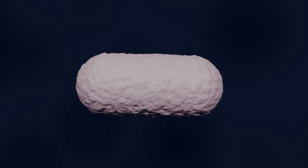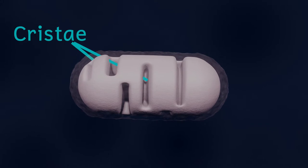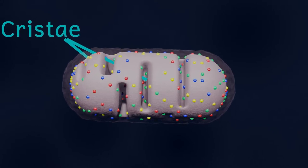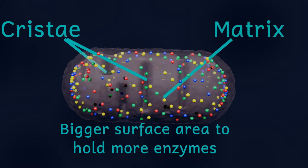Mitochondria have two membranes: an outer membrane and an inner membrane folded into structures called cristae. The cristae hold the enzymes needed for aerobic respiration, and these folds increase the surface area of the inner membrane, allowing more enzymes to be located here, again increasing the capacity for aerobic respiration. Inside the inner membrane is a fluid-filled area called the matrix.